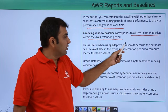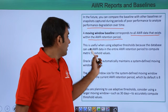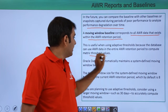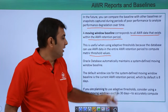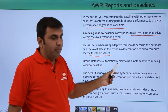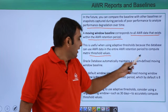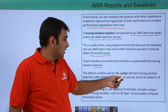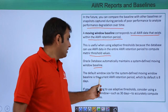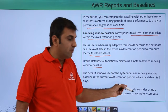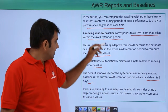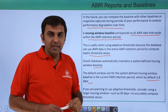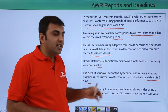The moving window baseline is useful when using adaptive thresholds, because the database can use AWR data across the entire AWR retention period to compute metric threshold values. Oracle Database automatically maintains the system-defined moving window baseline, and the default window size is the current AWR retention period, which is 8 days. After 8 days, the data is purged.